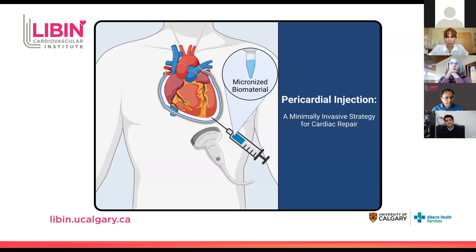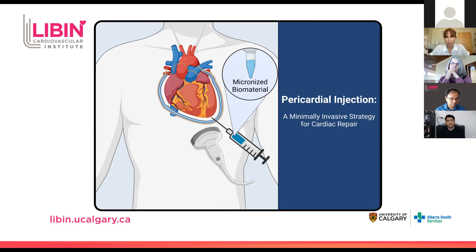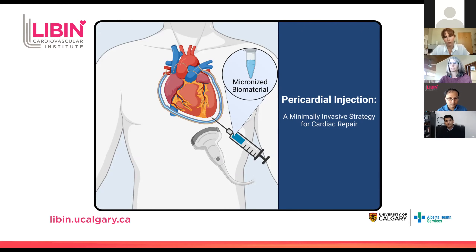Pericardial injection is a less invasive and less traumatic strategy to enhance cardiac repair with biomaterials. An ultrasound is used to guide placement of a needle or catheter into the pericardial space that surrounds and houses the heart. A micronized particulate biomaterial is then injected into the pericardial space and interacts with the heart to improve repair. There's no need for a big surgery or a massive incision, so it allows us to become incredibly versatile. We can apply this therapy at many points early on before fibrosis takes over. The patient can receive this therapy when they get an angiogram, or even by the bedside from a specialist.